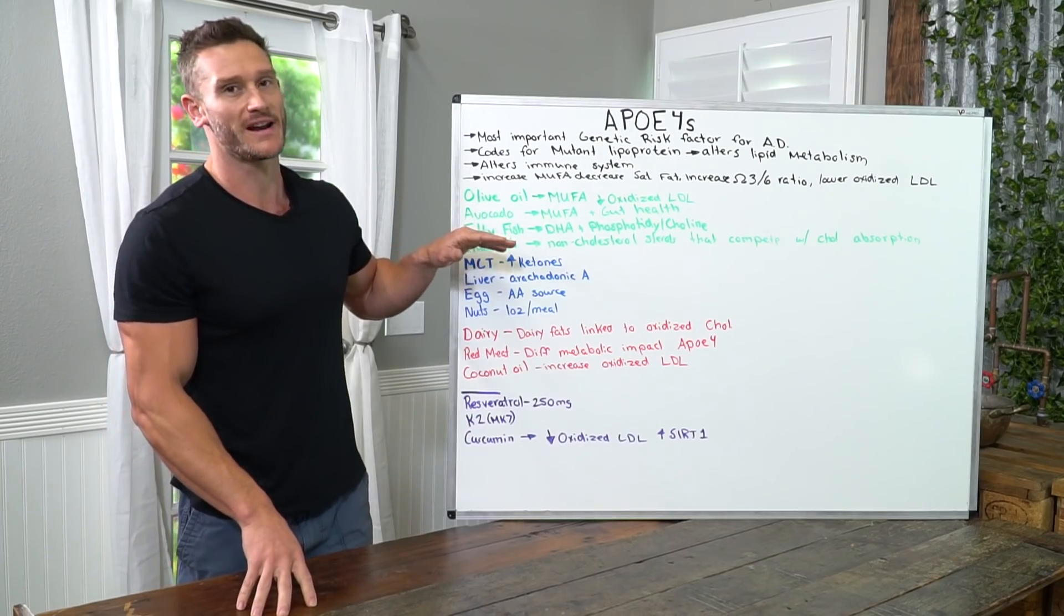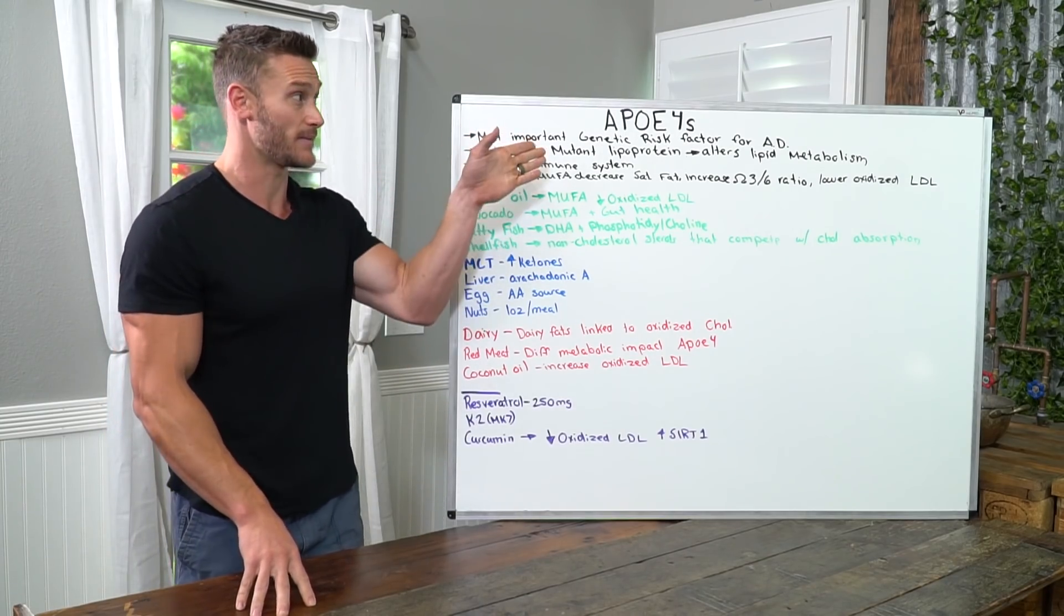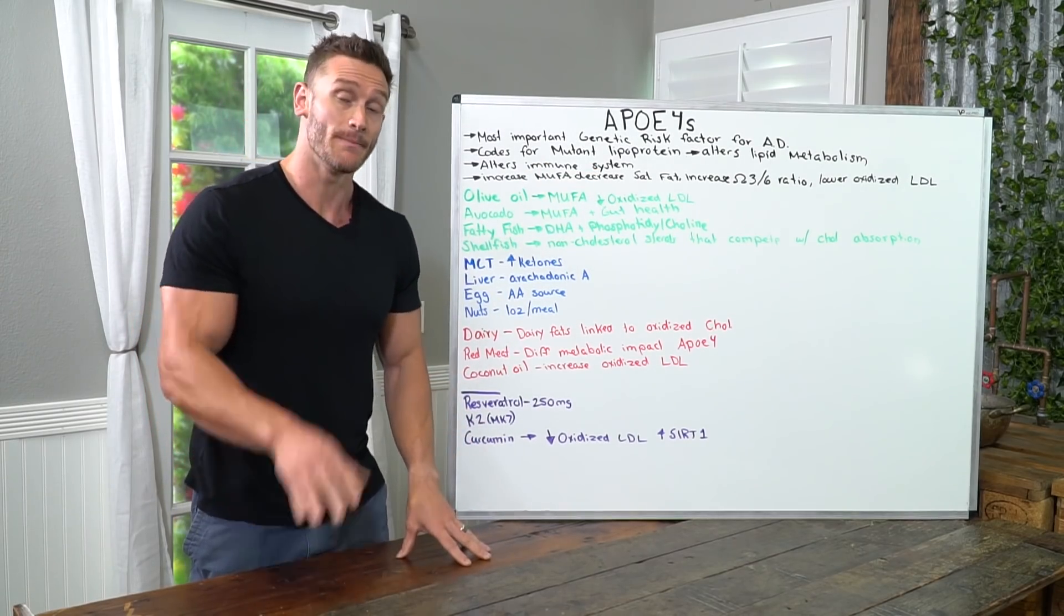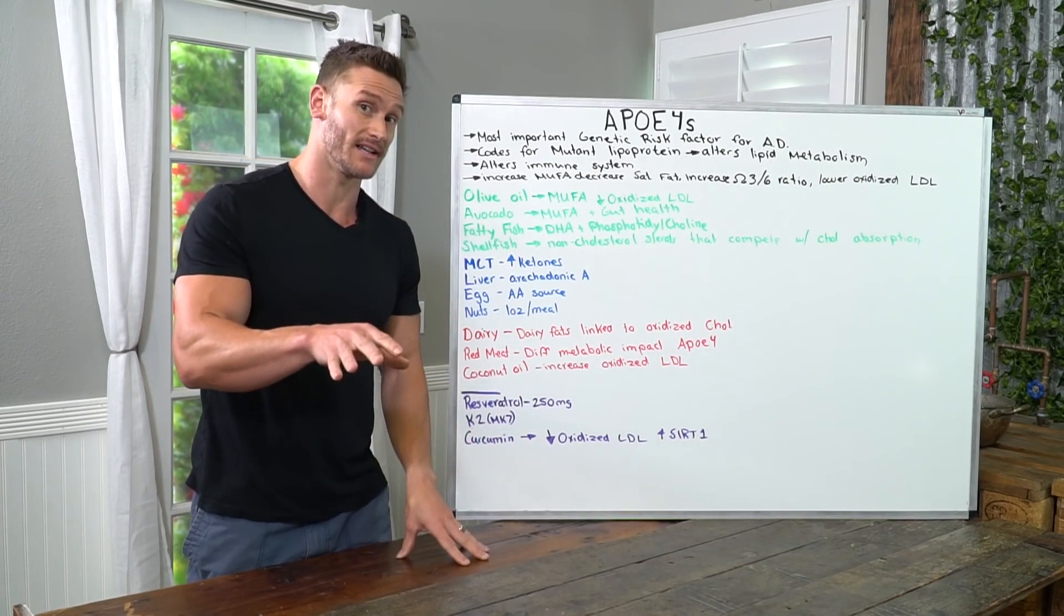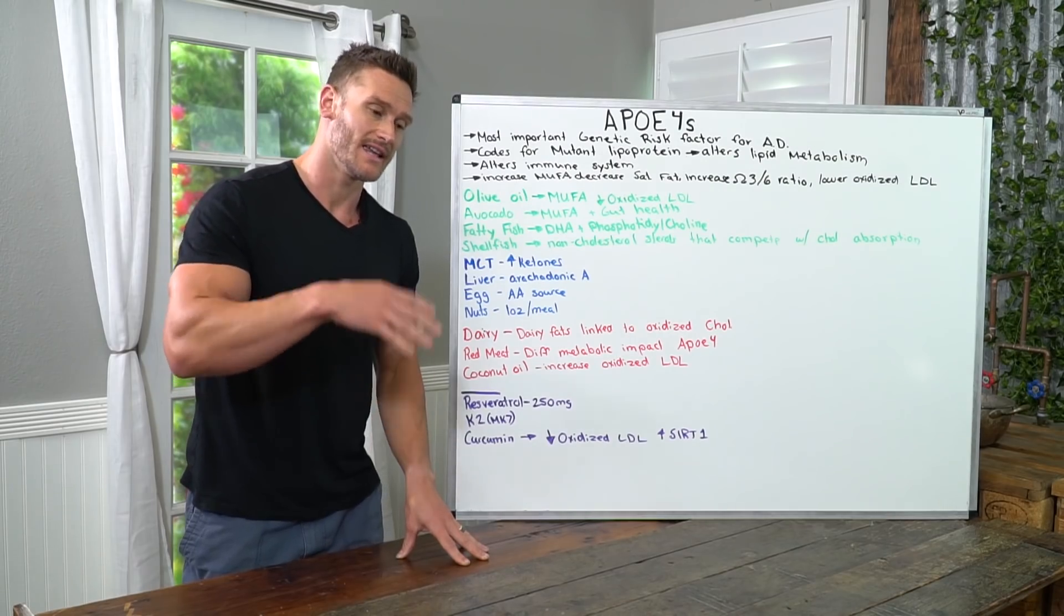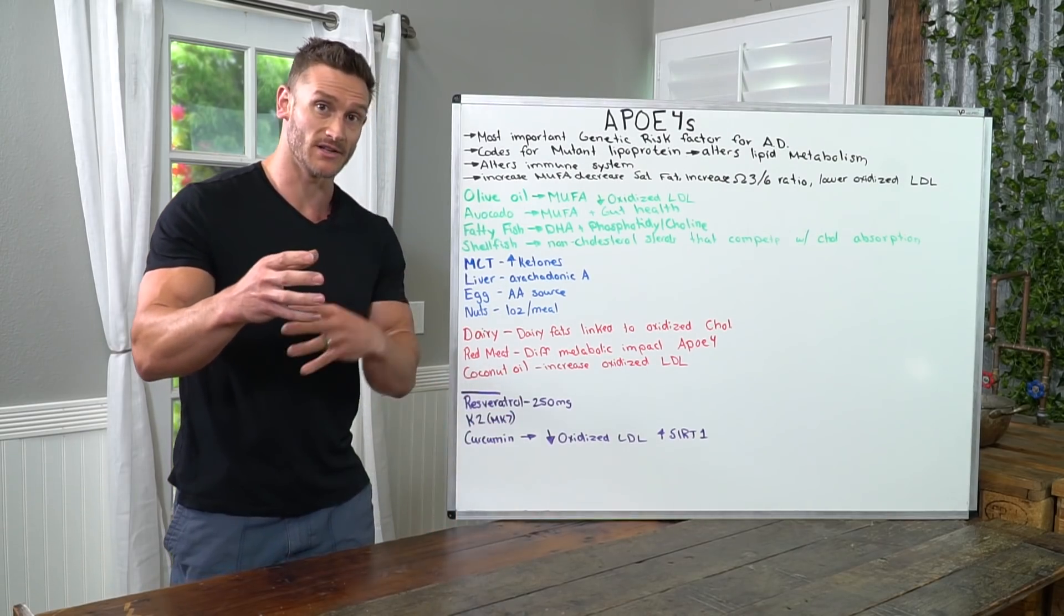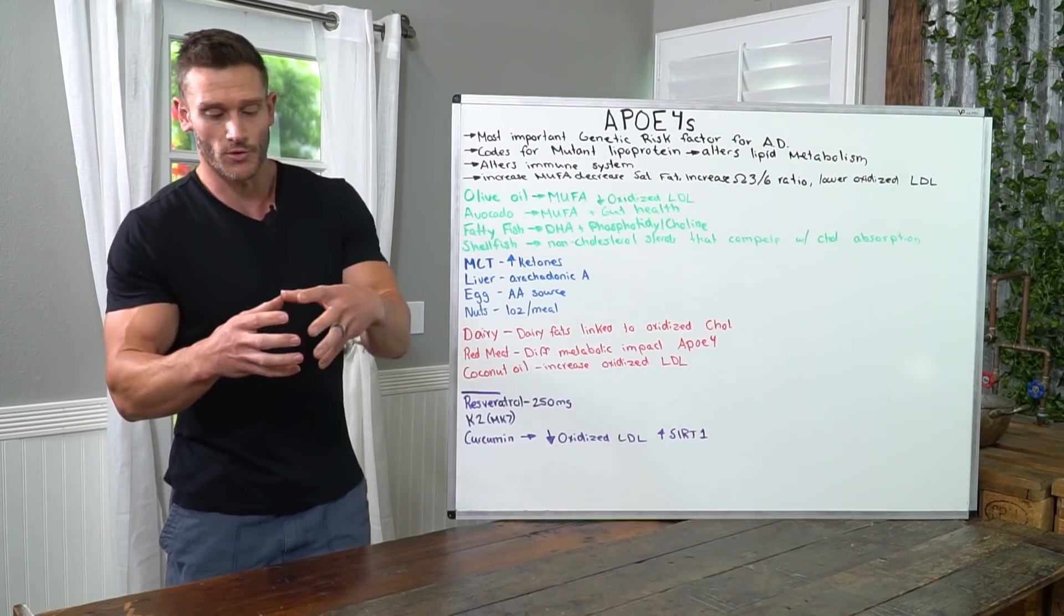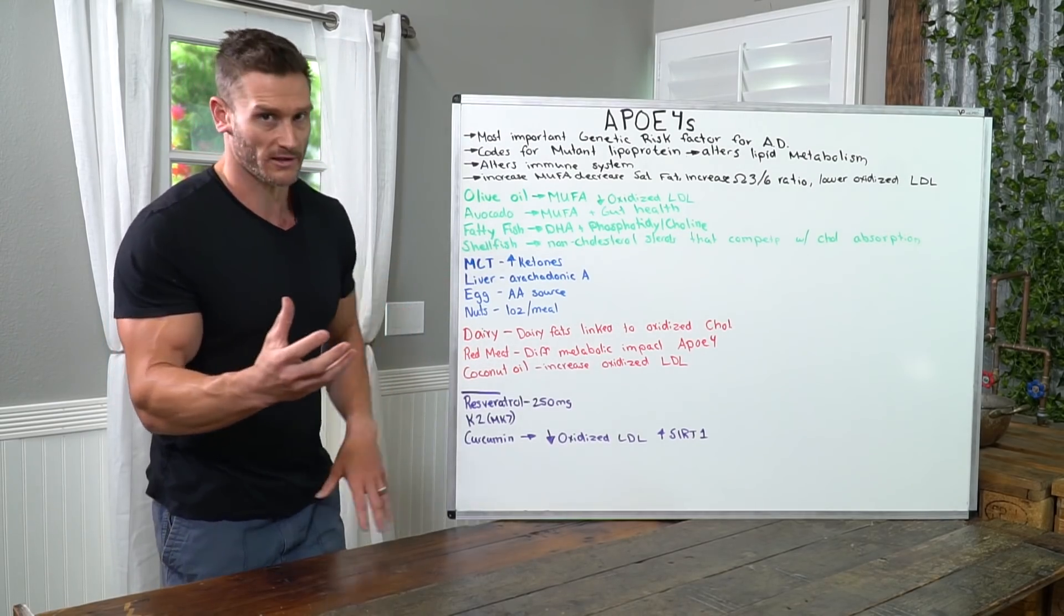So we get the monounsaturated fatty acids that the body can process if you have APOE4 and you also get the benefit of reducing oxidized LDL. Big difference between regular LDL and oxidized LDL, remember. Oxidized LDL is LDL that has been damaged from the glymphatic system, basically. It's been damaged through multiple different processes, so it's not normal LDL.